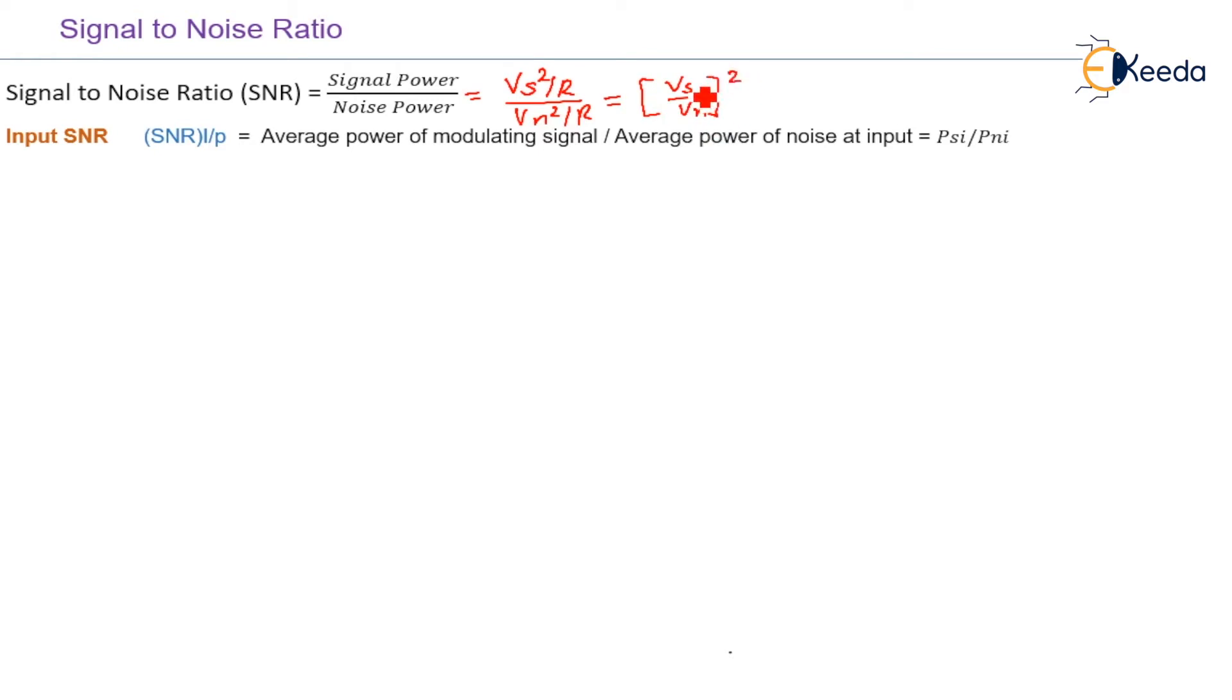The input signal to noise ratio is given as average power of modulating signal divided by average power of the noise at the input. So input signal power divided by input noise power. Here, output SNR can be represented as average power of the demodulated signal to the average power of the noise at output, PSO upon PnO, output signal power divided by output noise power.